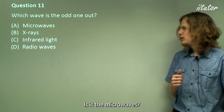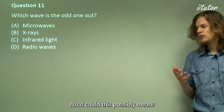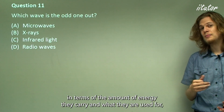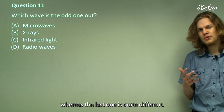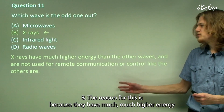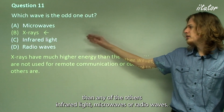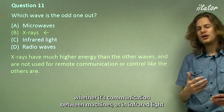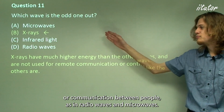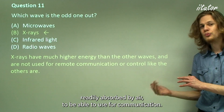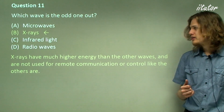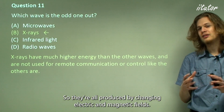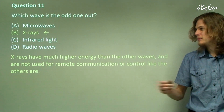Question 11: Which wave is the odd one out — microwaves, x-rays, infrared light, or radio waves? The answer is x-rays. Three of these are quite similar in energy and use, whereas x-rays are quite different. Radio waves, microwaves, and infrared light are all used for communication — whether between machines as with infrared, or between people as with radio and microwaves. X-rays on the other hand are far too energetic and far too readily absorbed by air to be used for communication. They are all electromagnetic waves produced by changing electric and magnetic fields, but in terms of energy and use, x-rays are definitely the odd one out.